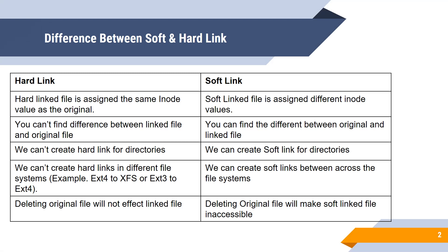With a hard link, we cannot create a hard link for directories. For example, if you want to create a hard link for directories, we cannot, because multiple directories with the same inode cannot be created — it would cause looping issues back to the original files and the linked file. In the case of a soft link, you can create soft links for directories, because whenever you store data into the soft link directory it stores to the original location, not the shortcut location.